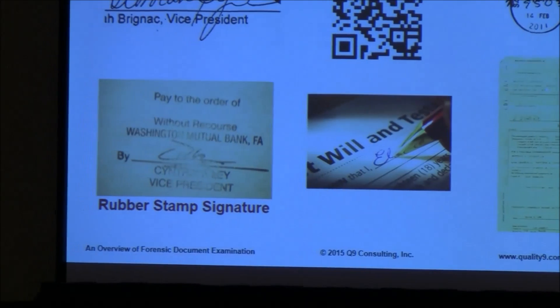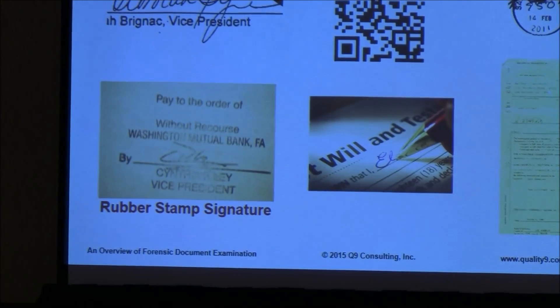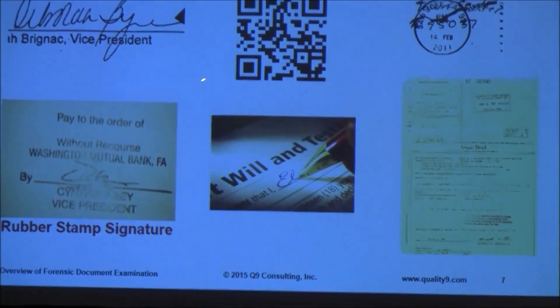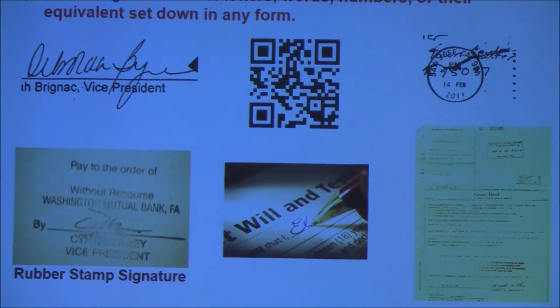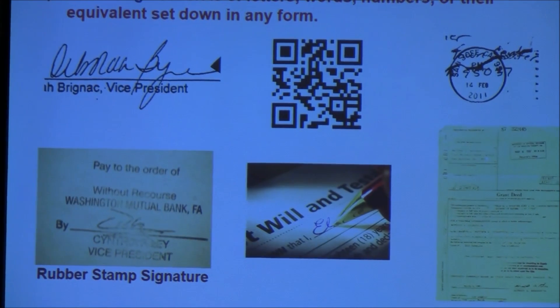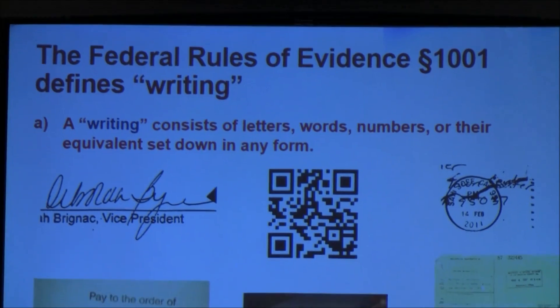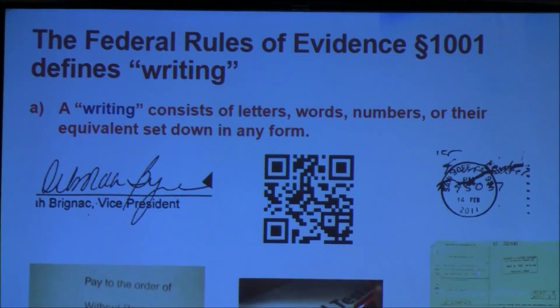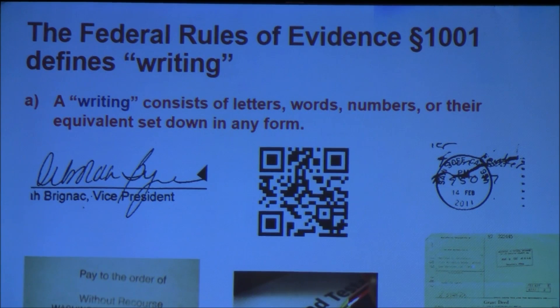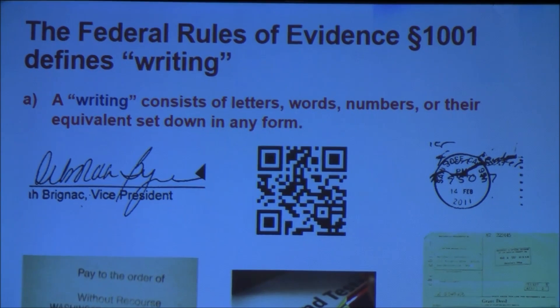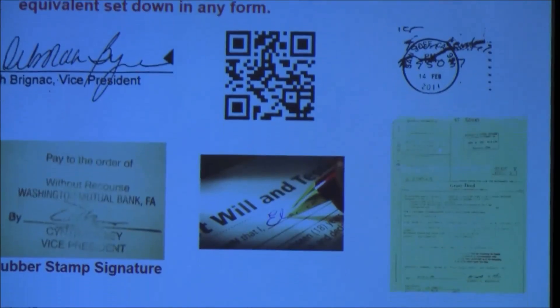When we look at Federal Rules of Evidence, Section 1001, when we talk about a writing, all of these are writings. This is a rubber stamp. This is a QR code — but the QR code can be a writing, because remember, in the definition it says symbol. When we talk about writing, it's really important to talk about writing, the original, and what we mean by it. In document examiner parlance, when we ask for an original, typically we are asking for the document that has the person's ink signature on it.